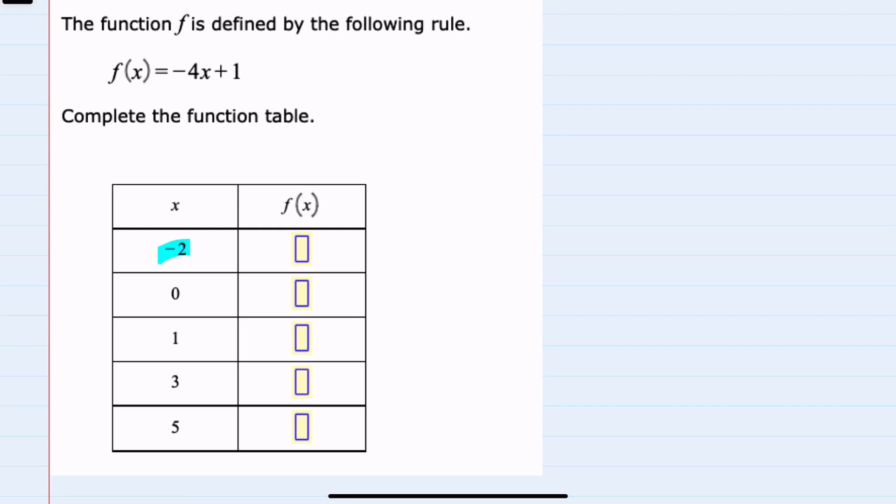Starting with -2, substituting that in to find f(-2) would mean replacing x with -2, giving us -4 times -2 plus 1.